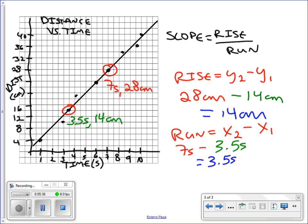So that means that the slope of this graph is 14 centimeters over 3.5 seconds. And if I plug that into a calculator, I get 4, and the unit on that is going to be centimeters per second. So that's how you're going to find slope in this class.